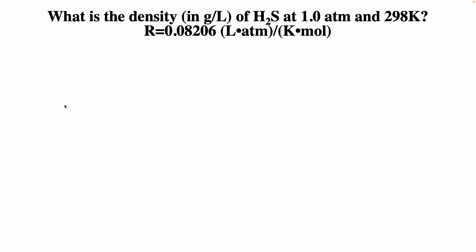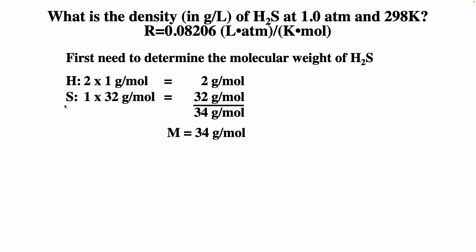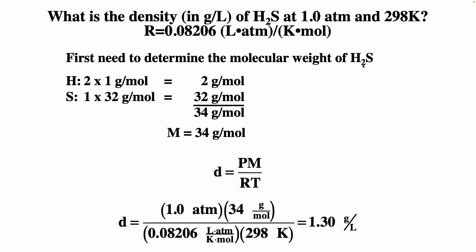What is the density in grams per liter of hydrogen sulfide at 1 atmosphere and 298 Kelvin? Using D = PM/RT. The molar mass of H2S: two hydrogens give 2, sulfur gives 32, so M = 34 g/mol. Plugging in: pressure = 1 atm, M = 34 g/mol, gas constant = 0.08206 L·atm/mol·K, temperature = 298 K. This gives a density of 1.39 grams per liter.